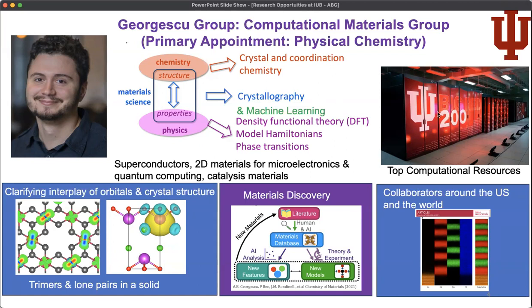We have top computational resources, including the top 300 supercomputer, which is one of our three supercomputers. We work on superconductors, 2D materials for microelectronics, quantum computing, catalysis materials, and so on.